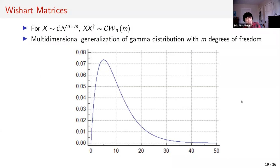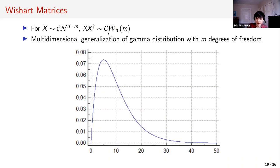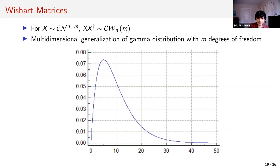Let me explain what a Wishart matrix is, since they're less common than Gaussian matrices. Essentially, if you have an N by M complex Gaussian matrix, its product with its conjugate transpose is Wishart distributed. The important parameter is M — the number of columns — which I call the degrees of freedom parameter. Effectively it's like the number of squared Gaussians being summed. It's the matrix version of a chi-squared or gamma distribution: a gamma distribution with M degrees of freedom is centered at M with width root-M.